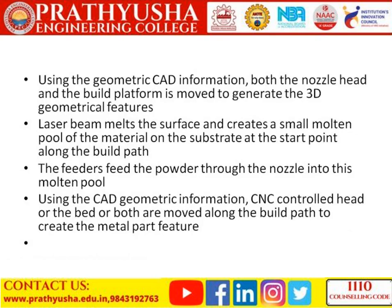Using geometric CAD information, both the nozzle head and the build platform are moved to generate 3D geometrical features. The laser beam melts the surface and creates a small molten pool of material on the substrate at the start point along the build path. The CNC-controlled head and bed are then moved along the build path to create the metal path feature.